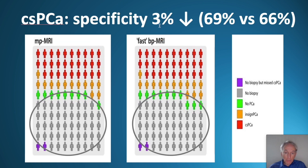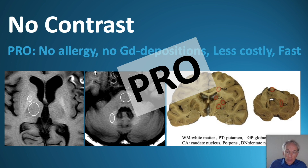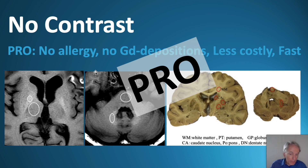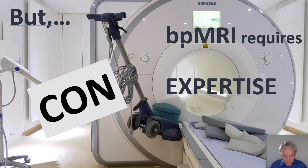Specificity was slightly lower, which leads to the conclusion: why give contrast? Without it, we avoid allergy, there is no gadolinium brain deposition, it is less costly, and it is fast. But there is a big caveat — it requires expertise.